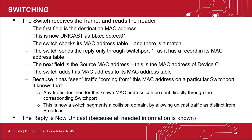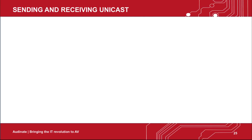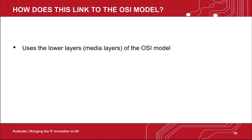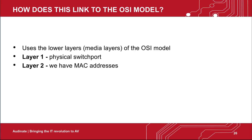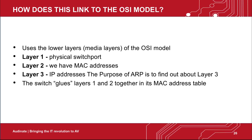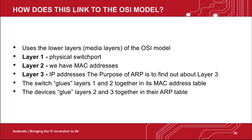The reply is now unicast. Device A receives the response and updates its ARP table. ARP uses the lower layers of the OSI model. At layer 1, we have the physical switch port. At layer 2, we have MAC addresses. We refer to IP addresses at layer 3. The purpose of ARP is to find out about layer 3. The switch glues layers 1 and 2 together in its MAC address table. The devices glue layers 2 and 3 together in their ARP table.